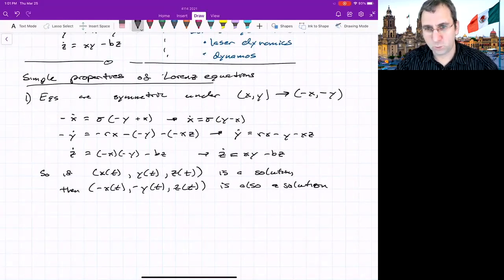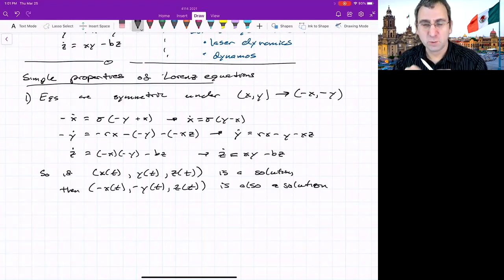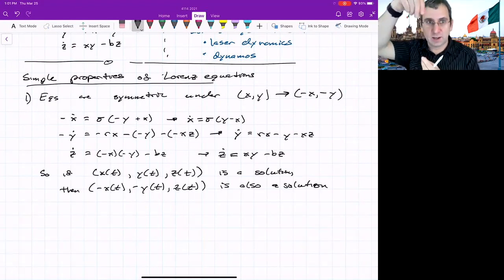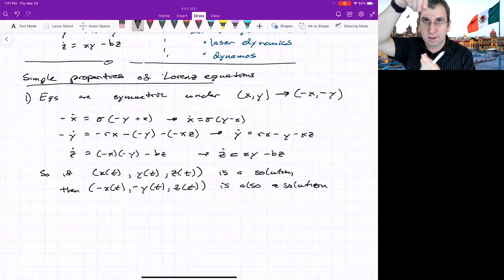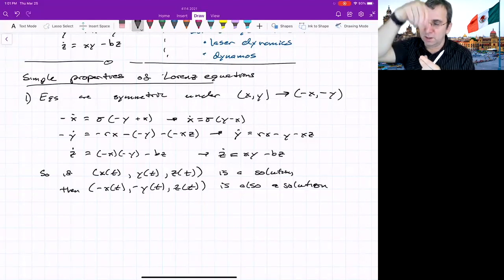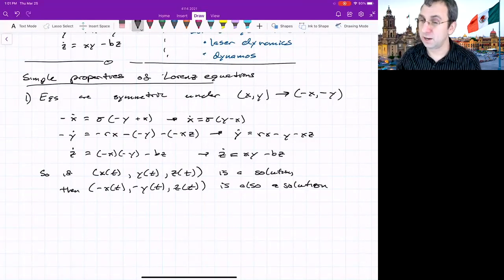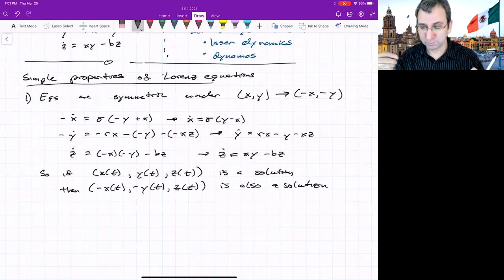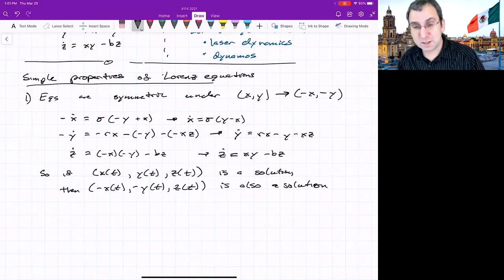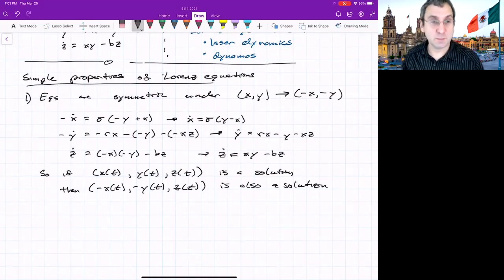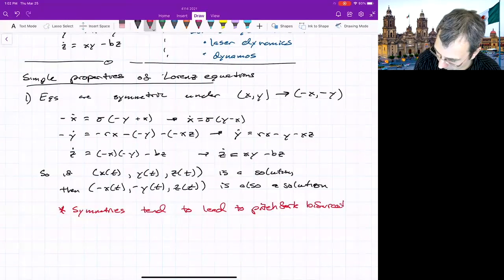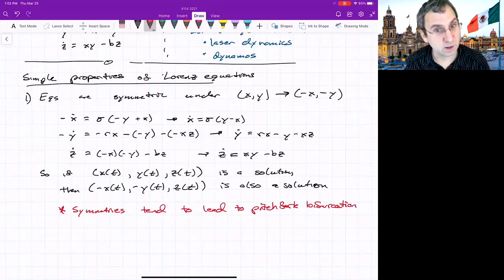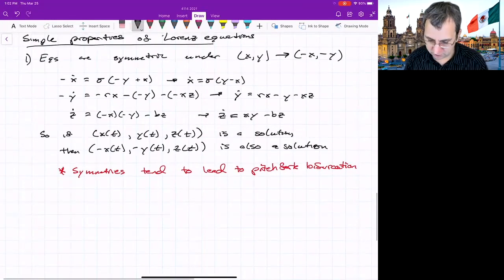And when we have symmetry like this, if you remember the bead in the rotating hoop, we had this symmetry, left-right symmetry, because we were exactly rotating about the middle. Not deviated, but right in the middle. If you remember what kind of bifurcation we got with that as we tuned a parameter, we got a pitchfork bifurcation. So when you have symmetries, you'll tend to get a pitchfork bifurcation. So we may have something like that in this system as well. So that's one thing to notice.